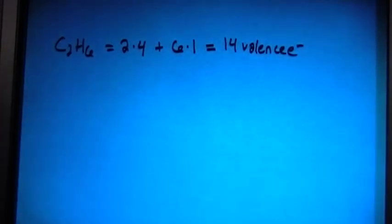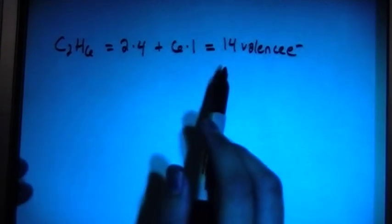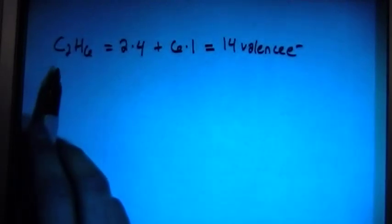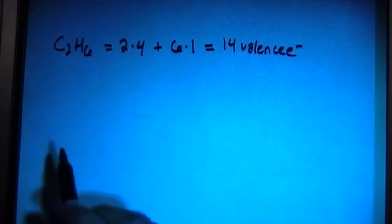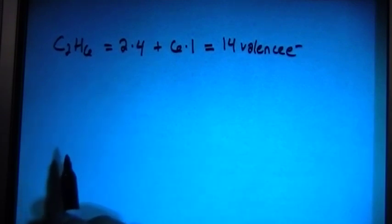Okay, and so next, what we have to do is then, now, because it has 14 valence electrons, and because this is going to have 2 central atoms with 2 carbons, we can't use the trick that I typically like to do, also because it has hydrogen, that won't work. So let's go ahead and just start to draw this thing out.